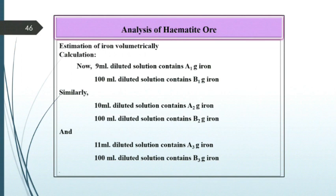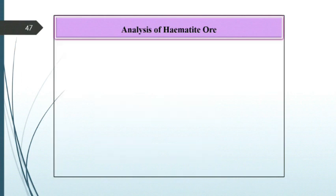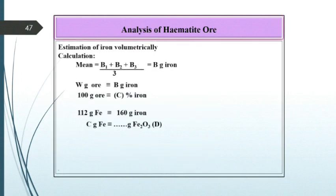Then, 9 ml diluted solution contains A1 gram iron. Therefore, 100 ml diluted solution contains B1 gram of iron. Similarly, calculate for 10 ml and 11 ml. Take the mean of B1, B2, B3 and record it as B gram of iron.